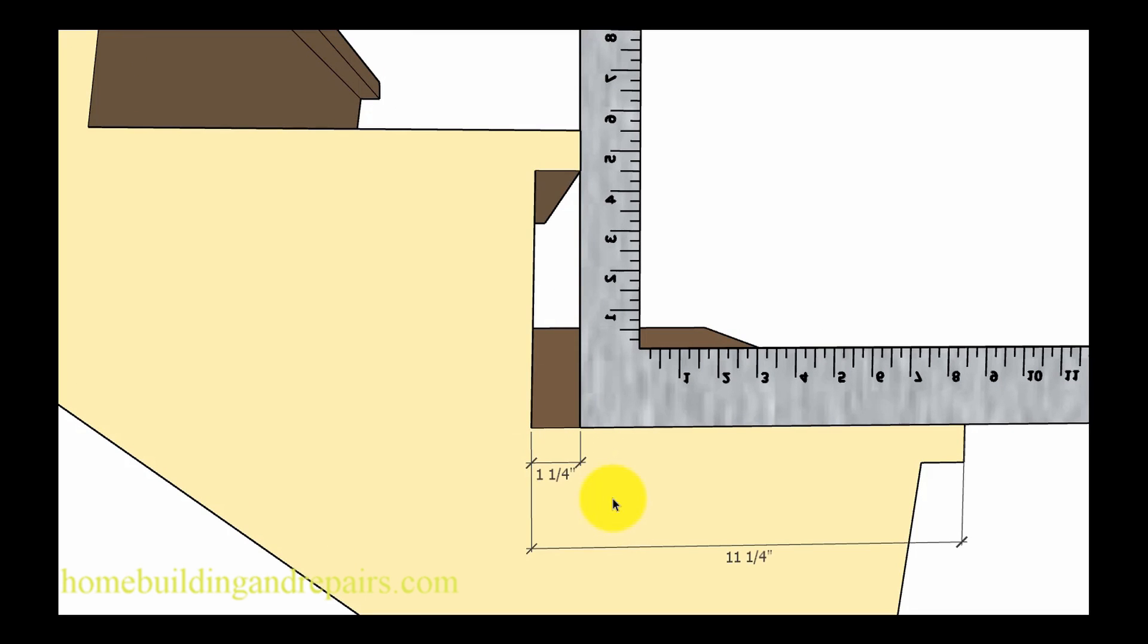However something like this would work if you wanted to use the undercut. Here we would have a one inch nosing along with a quarter inch undercut to provide us with our inch and a quarter maximum distance required by our local building codes. If we take a look at this step here we have an 11 and a quarter inch long step instead of an 11 inch step.